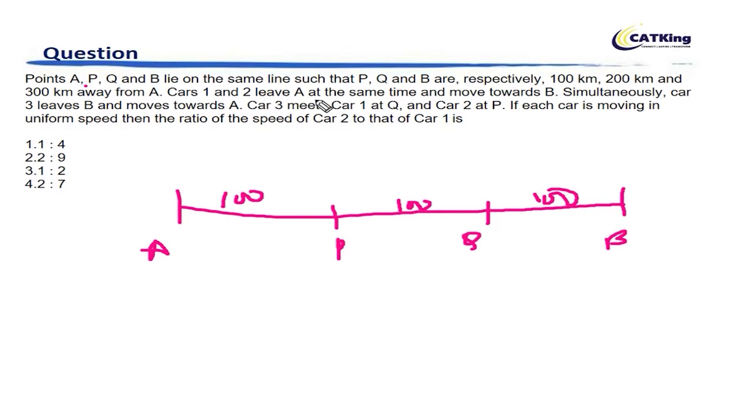Car 1 and car 2 leave A at the same time and move towards B. Simultaneously, car 3 leaves B and moves towards A. Now car 3 meets car 1 at Q.